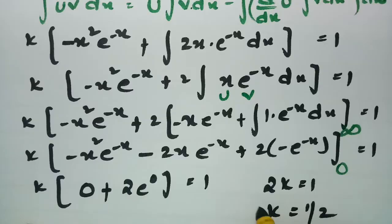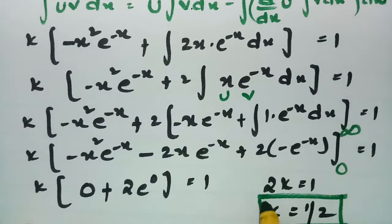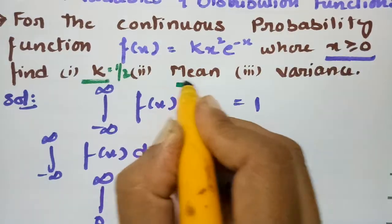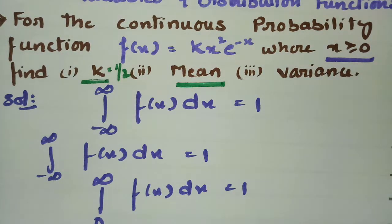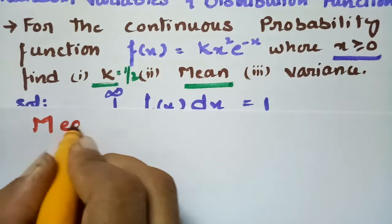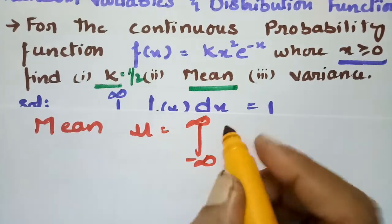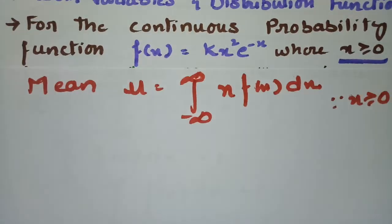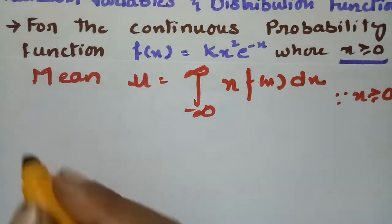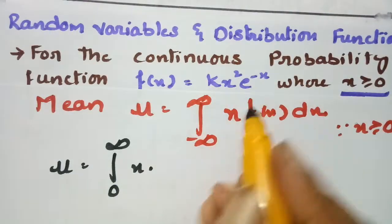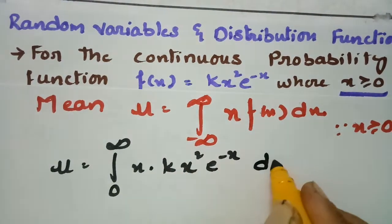We got the constant k = 1/2. Next, we find the mean. For a continuous distribution, the mean μ = ∫(−∞ to +∞) x·f(x) dx. Since x ≥ 0, we consider only positive values, so μ = ∫(0 to ∞) x · f(x) dx, where f(x) = k x² e^(-x).